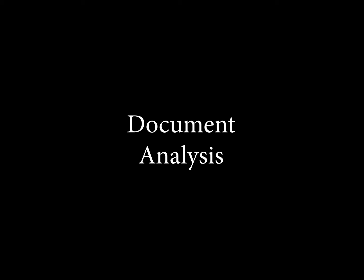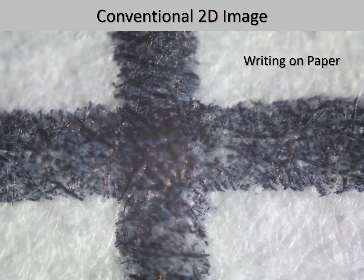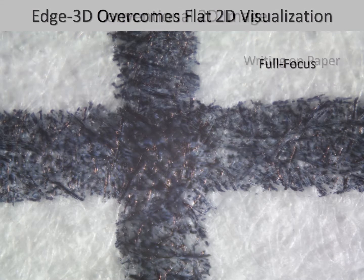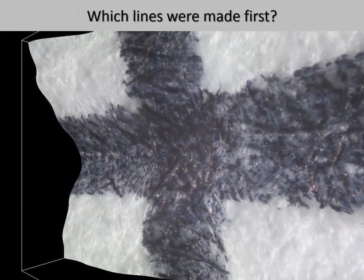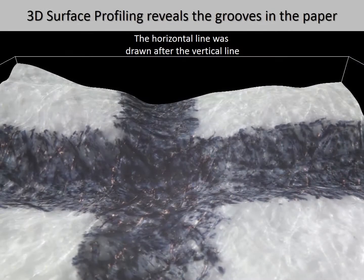Document analysis is an important area of forensic science to determine forgeries and counterfeits. Here is a two-dimensional image of two strokes of a ballpoint pen on paper, followed by a full focus image of the two strokes. The question is: which stroke was created first? A 3D model shows that the pen strokes create tiny grooves in the paper, and indicates that the horizontal line was drawn after the vertical line.